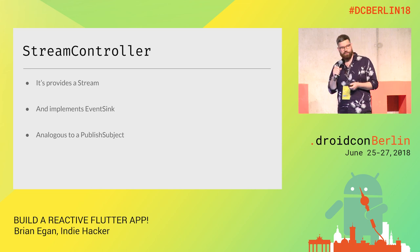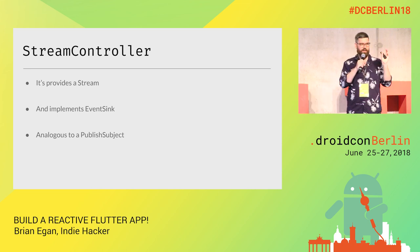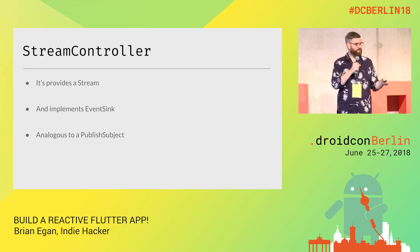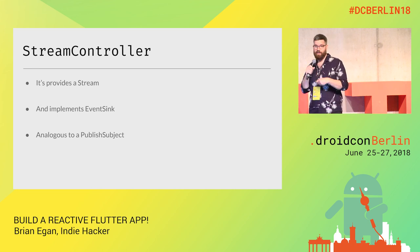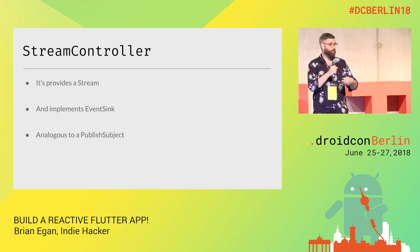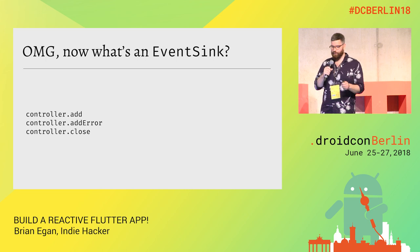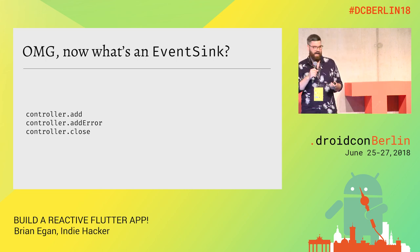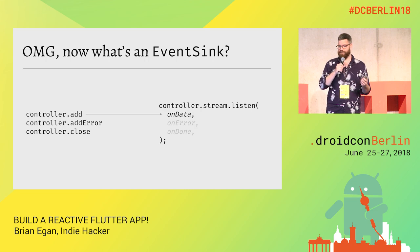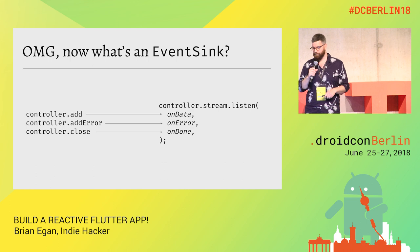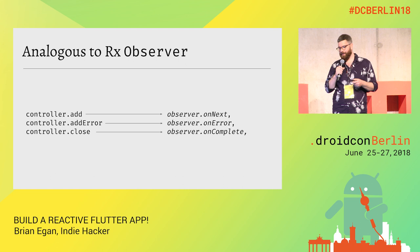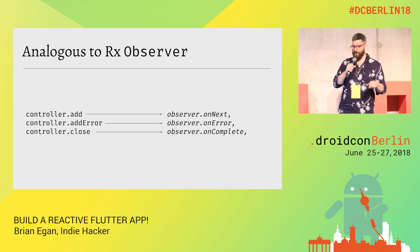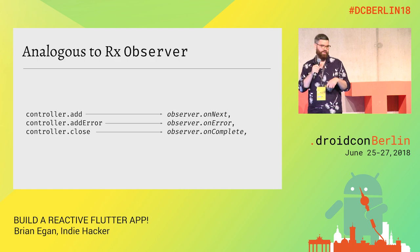The final way to create streams is with a stream controller — a glue between the inputs and outputs of a stream. It provides a stream you can listen to, and also provides what's called an event sink. The sink allows you to add data, add errors, or close the stream. The three methods on the event sink — `add`, `addError`, and `close` — correspond closely to Rx's `onNext`, `onError`, and `onComplete`.